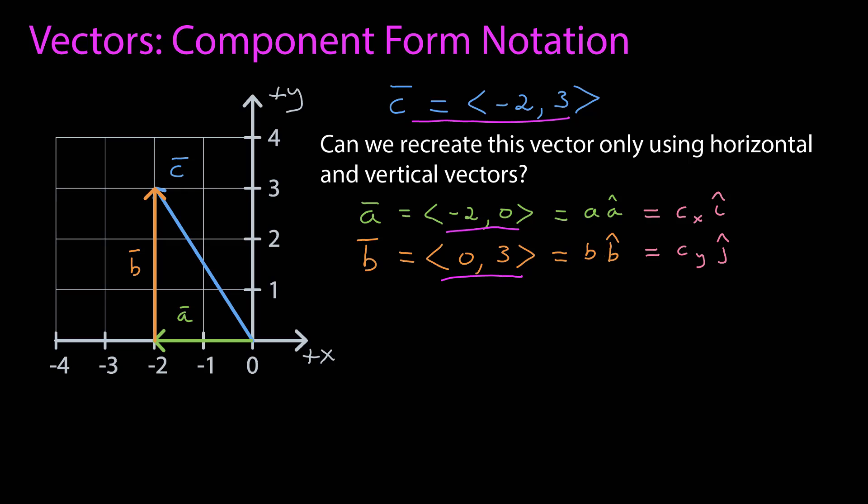They are unit vectors, but they point in the positive x and y-axis respectively. The number that multiplies them is then whatever number necessary to recreate the horizontal and vertical vectors.